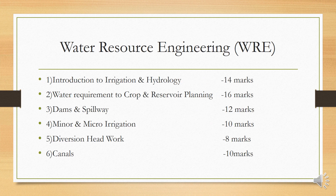Water Resource Engineering has a total of six topics. The first topic is Introduction to Irrigation and Hydrology. In this first chapter, we learn about the definition of irrigation, then classification of irrigation, then what is hydrology, what is the hydrological cycle, then what is a rain gauge, what is runoff, etc.